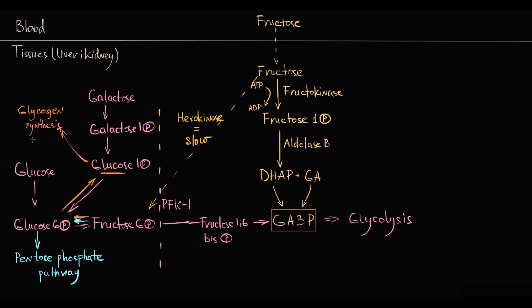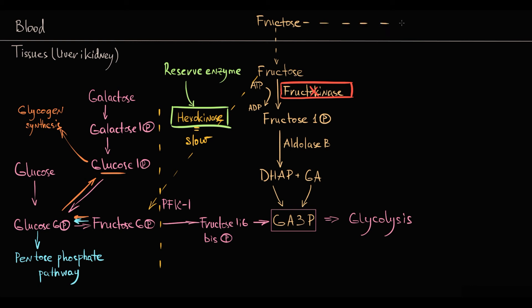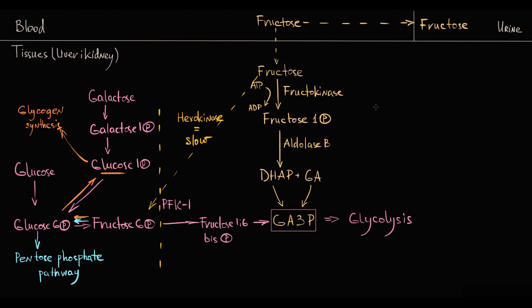Overall, hexokinase is a reserve enzyme — an emergency option that becomes important only when fructokinase is not working. Fructose can also be excreted from the blood into the urine. This covers the general concept of fructose metabolism under normal conditions.